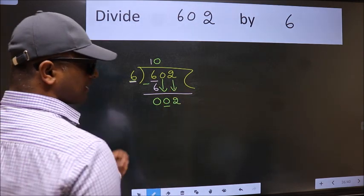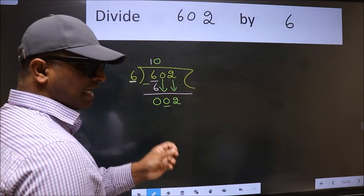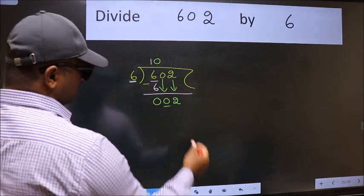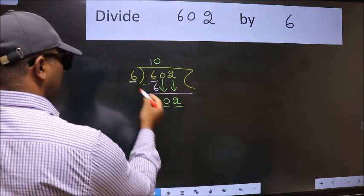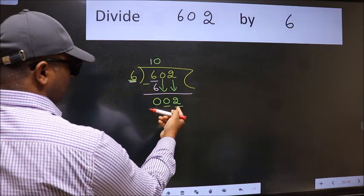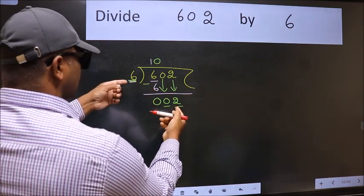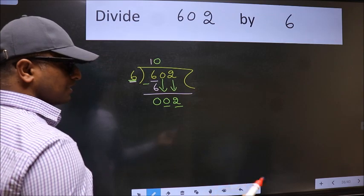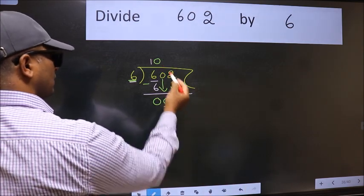After this step, the mistake happens. And the mistake is this. Here we have 2 and here 6. 2 is smaller than 6. So what many do is, they directly put dot take 0.